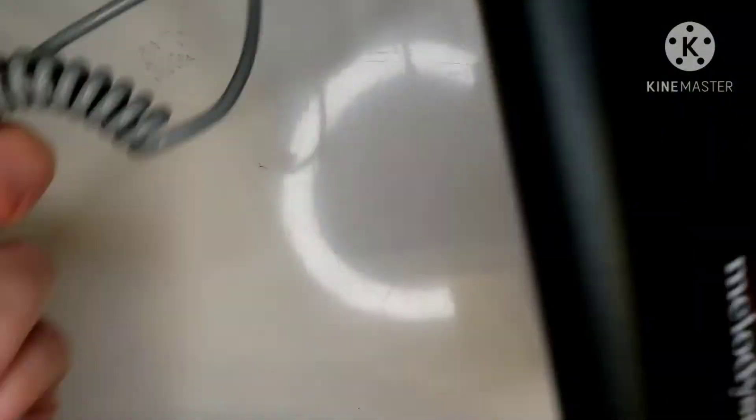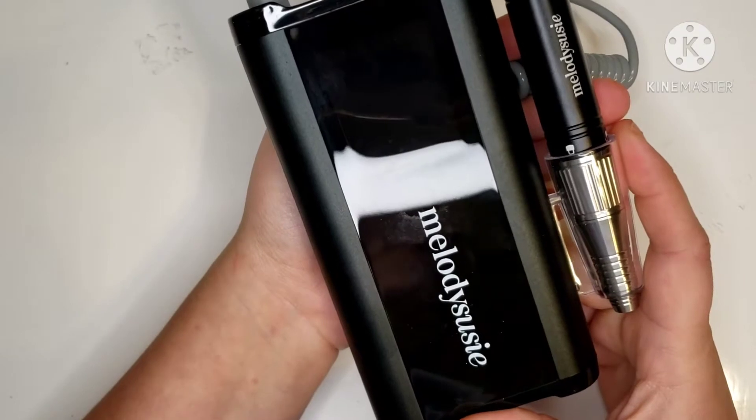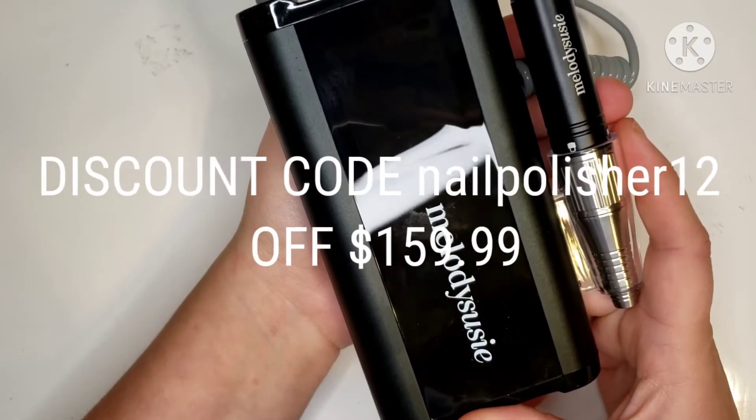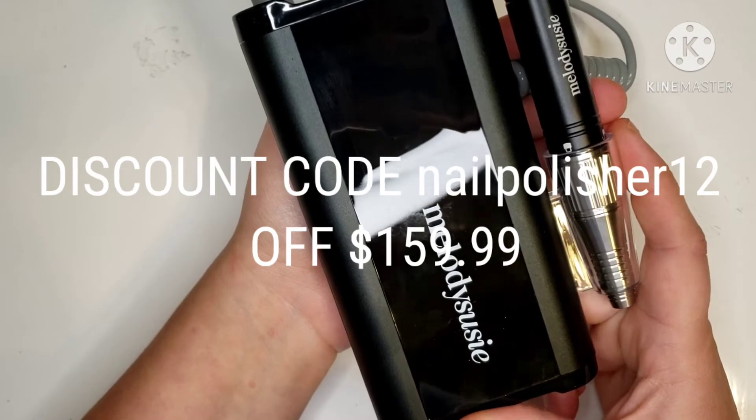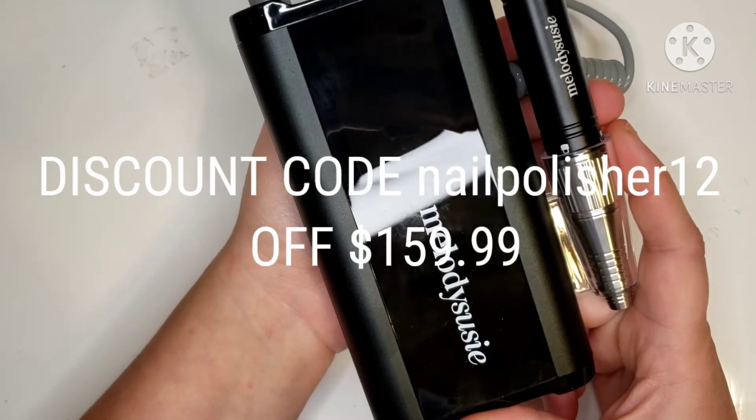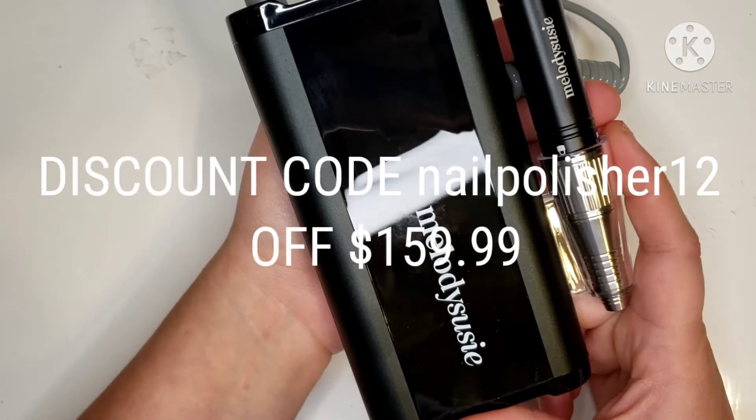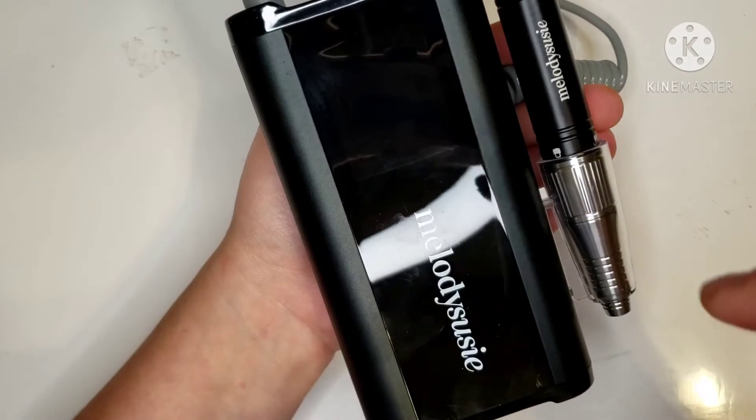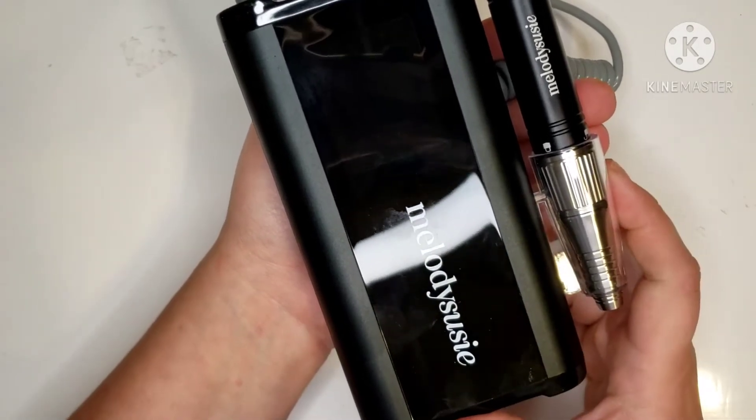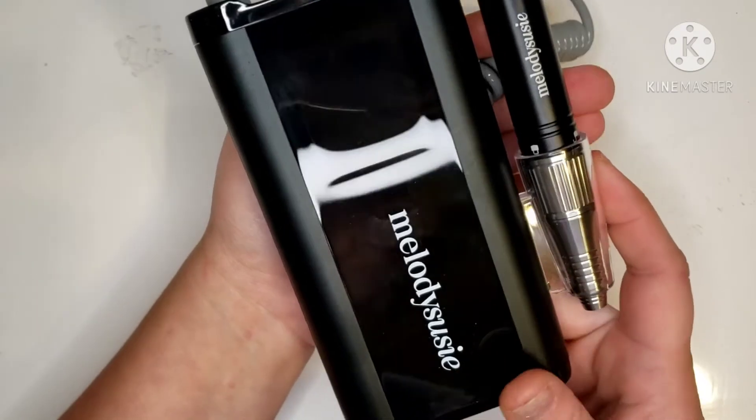The rechargeable e-file is normally $189.99 on their website. Right now it is on sale for $159.99. They have kindly sent me a 12% discount code for you guys. That will be up on the screen as well in the comment section down below. Don't forget to use that as well to save yourself a few extra pennies.